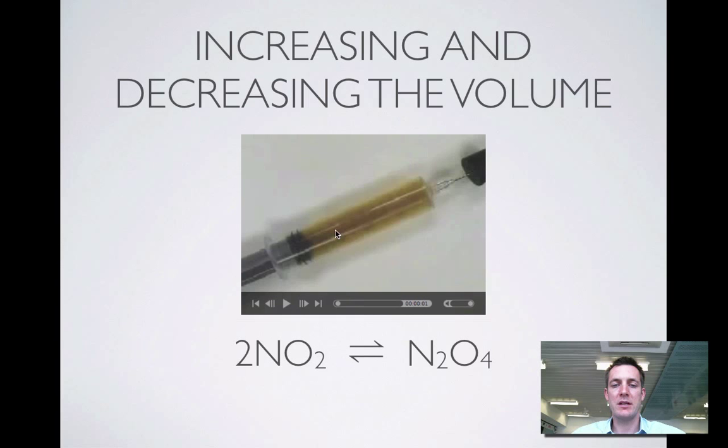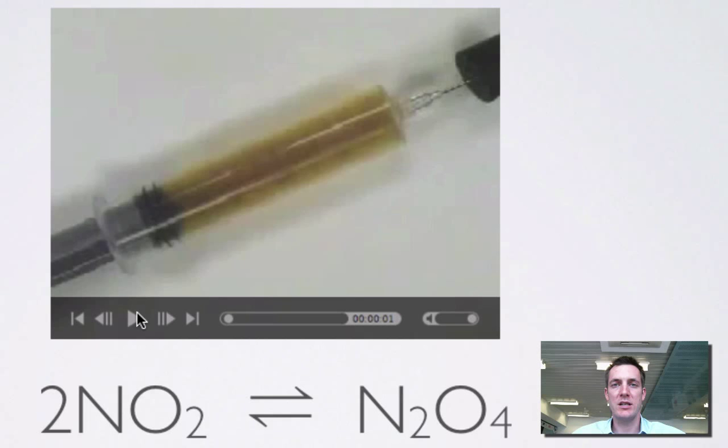is what happens to the color when we compress the syringe (making the volume smaller) and when we decompress it (making the volume larger). Let's let this film run so we can see these changes happening.